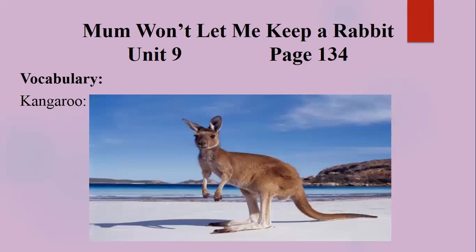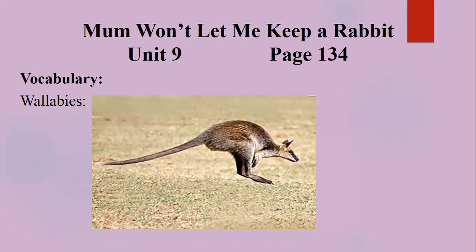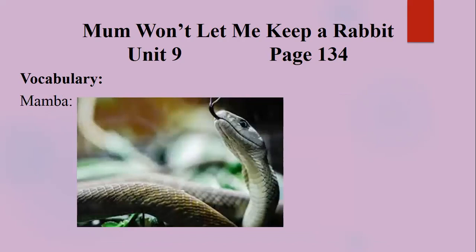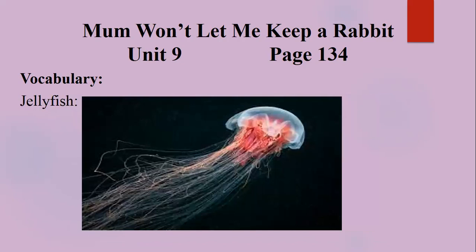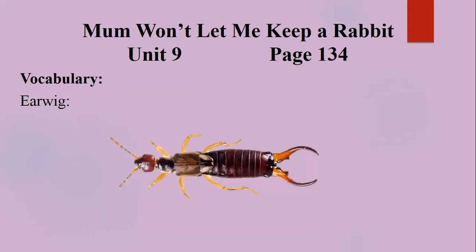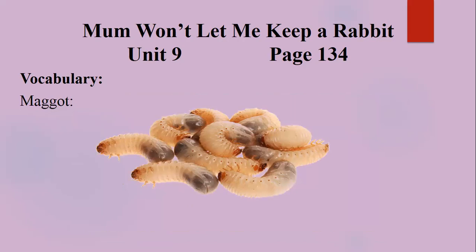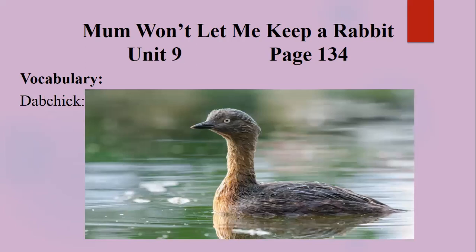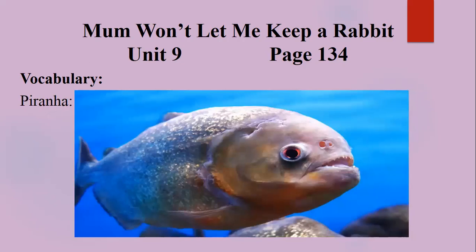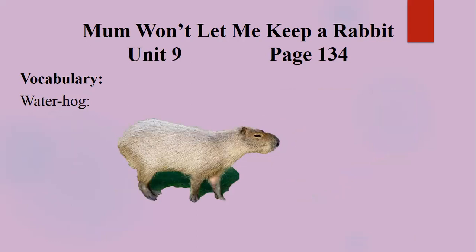Continuing the animal vocabulary: kangaroo, wallabies, rattlesnake, mamba, wombat, iguana, jellyfish, bumblebee, earwig, maggot, flea, wildebeest, mallard, dab chick, piranha, octopus, and water hawk.